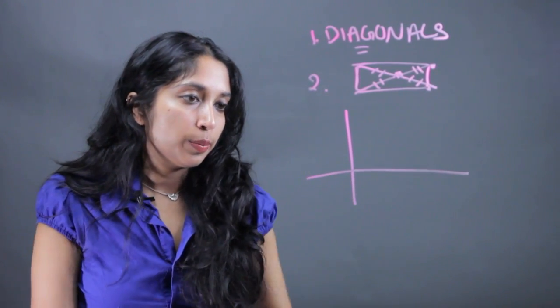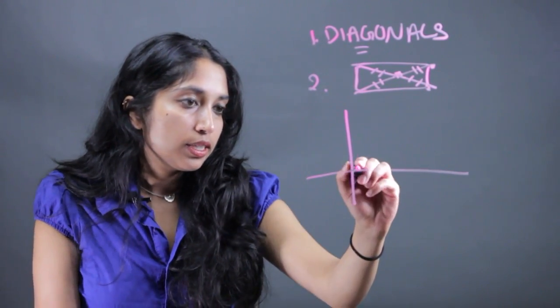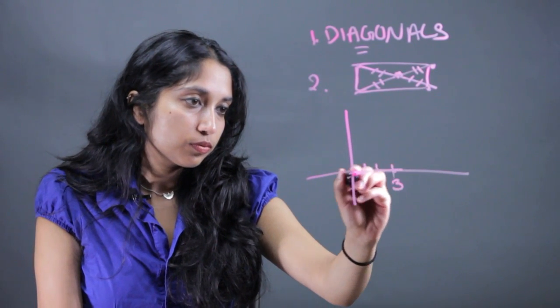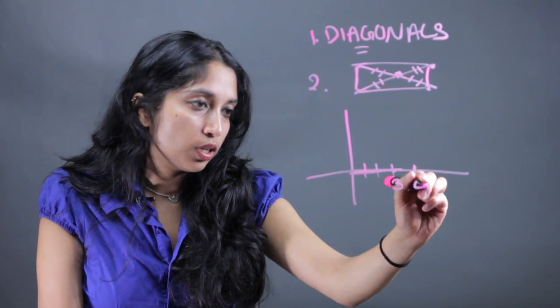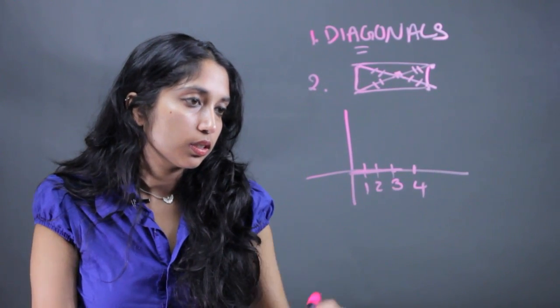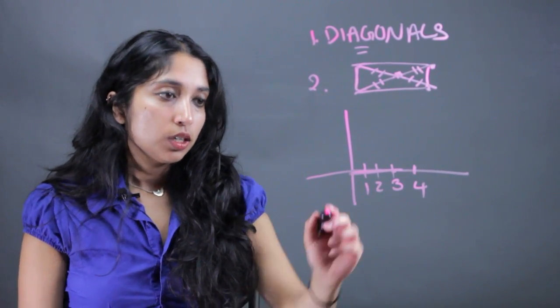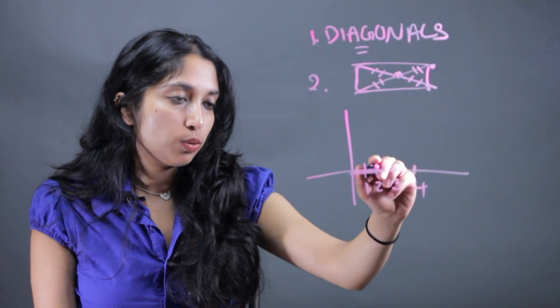Now say I know some diagonal. Say they tell me that the diagonal is three units long, right? Actually, let's make that four units long, so it's easier. Now I know that the second diagonal is going to bisect it, so it's going to divide that into two equal pieces.